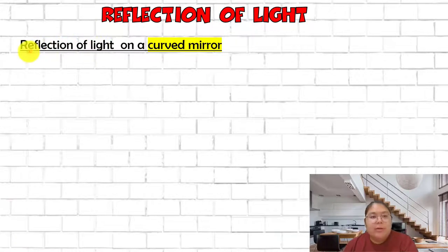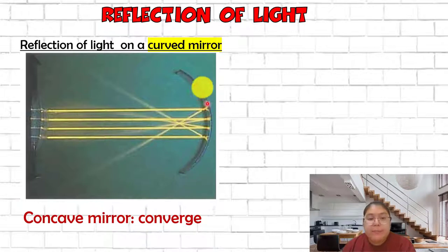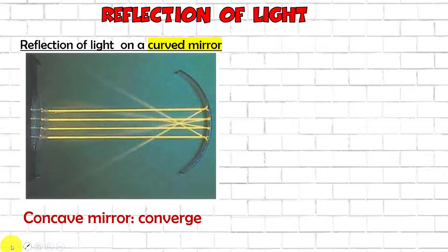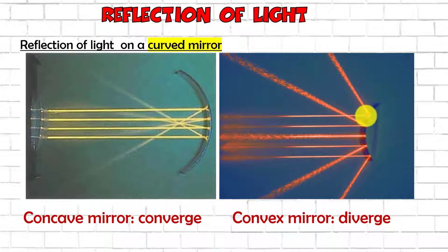Now here is an experiment showing the refraction of light on curved mirrors. From the ray box, the light comes and hits the concave mirror - it focuses to one point after reflecting, which we call the focal point. For the convex mirror, the parallel light rays hit and reflect, and since the mirror blocks the behind, the light rays diverge to a wider area. This is proof from the experiment.